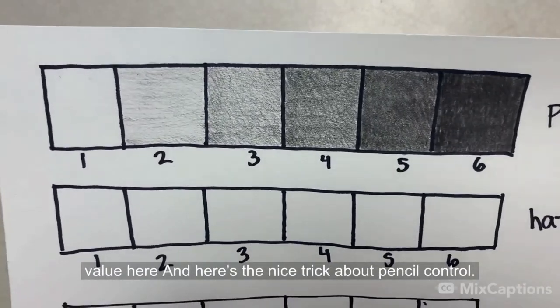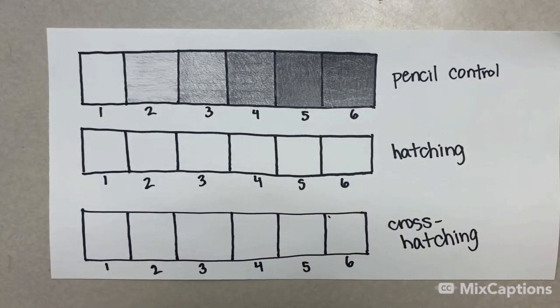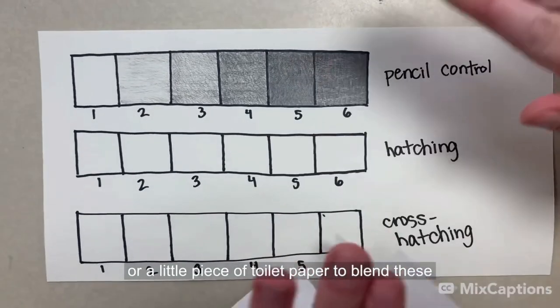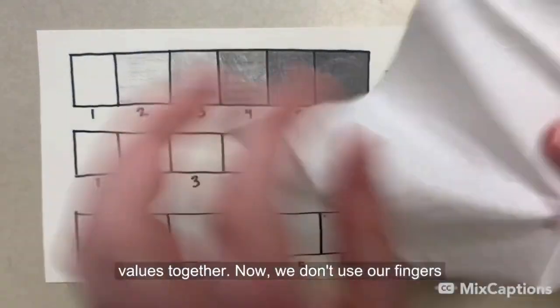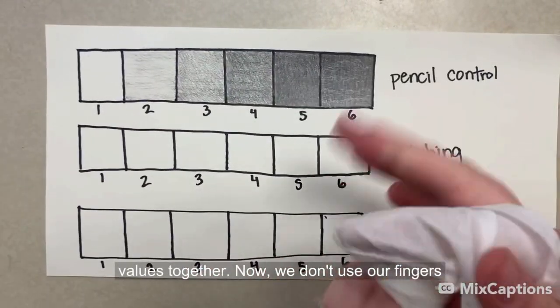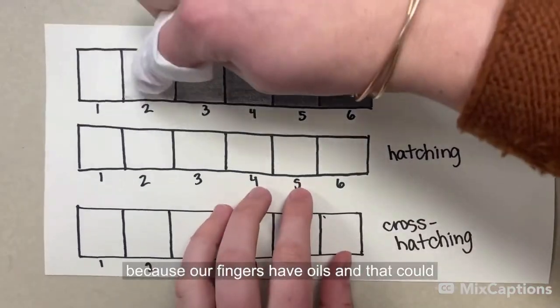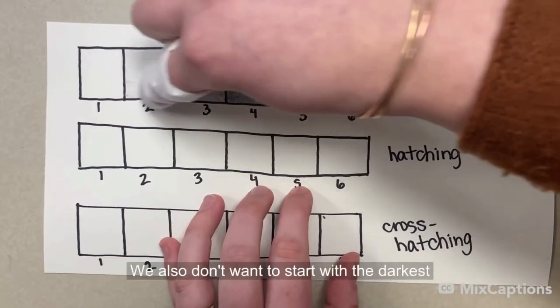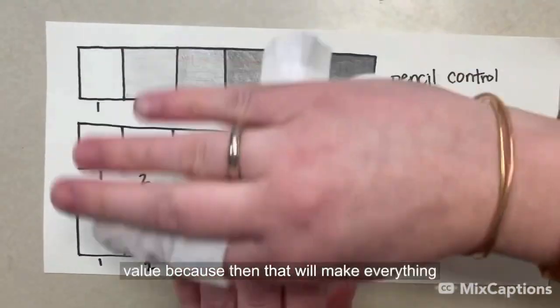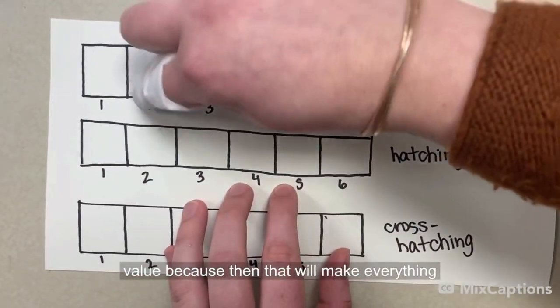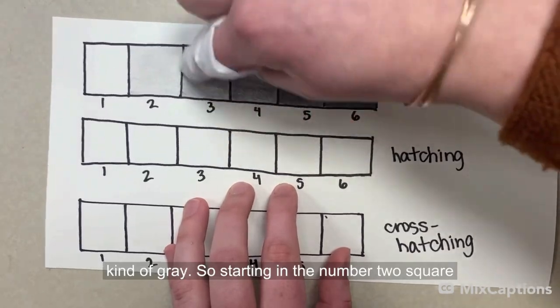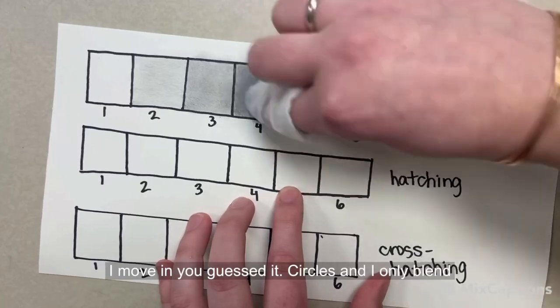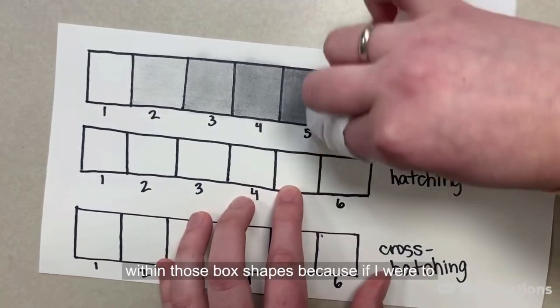And here's the nice trick about pencil control. You could actually go ahead and take that tissue or little piece of toilet paper to blend these values together. Now we don't use our fingers because our fingers have oils, and that could actually ruin the graphite of the pencil on the paper. We also don't want to start with the darkest value, because then that will make everything kind of gray. So starting in the number two square, I move in, you guessed it, small circles, and I only blend within those box shapes.